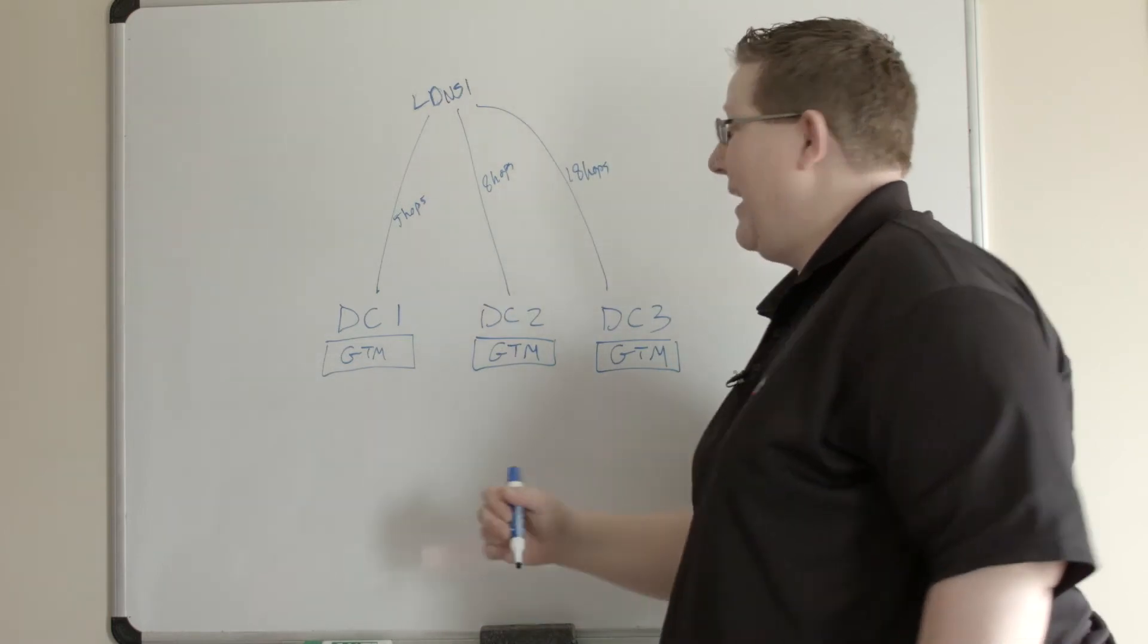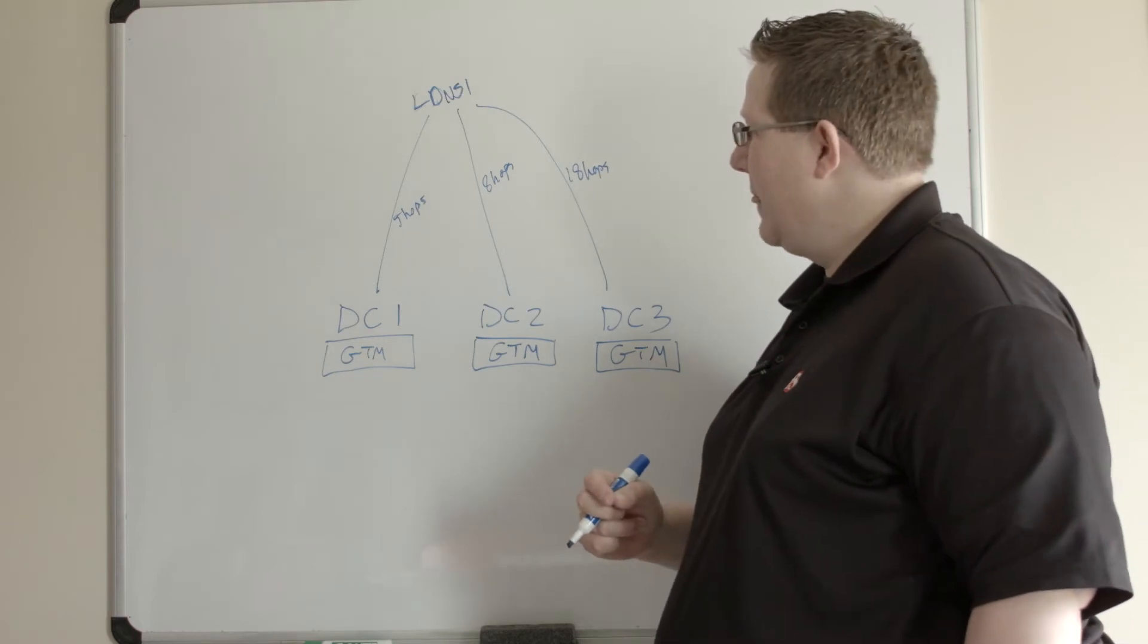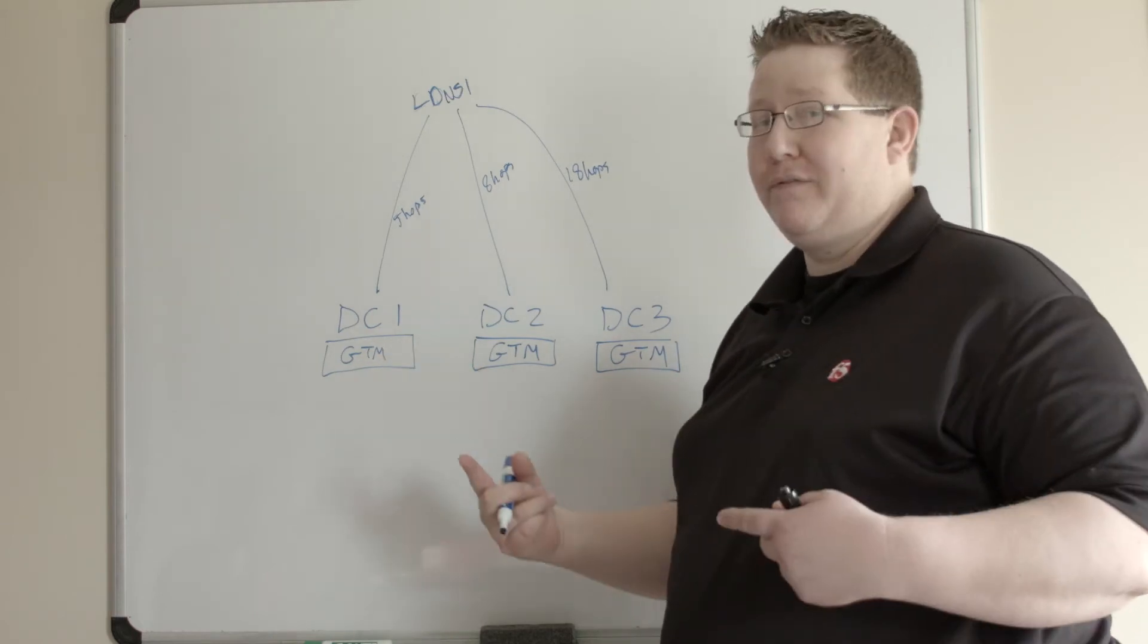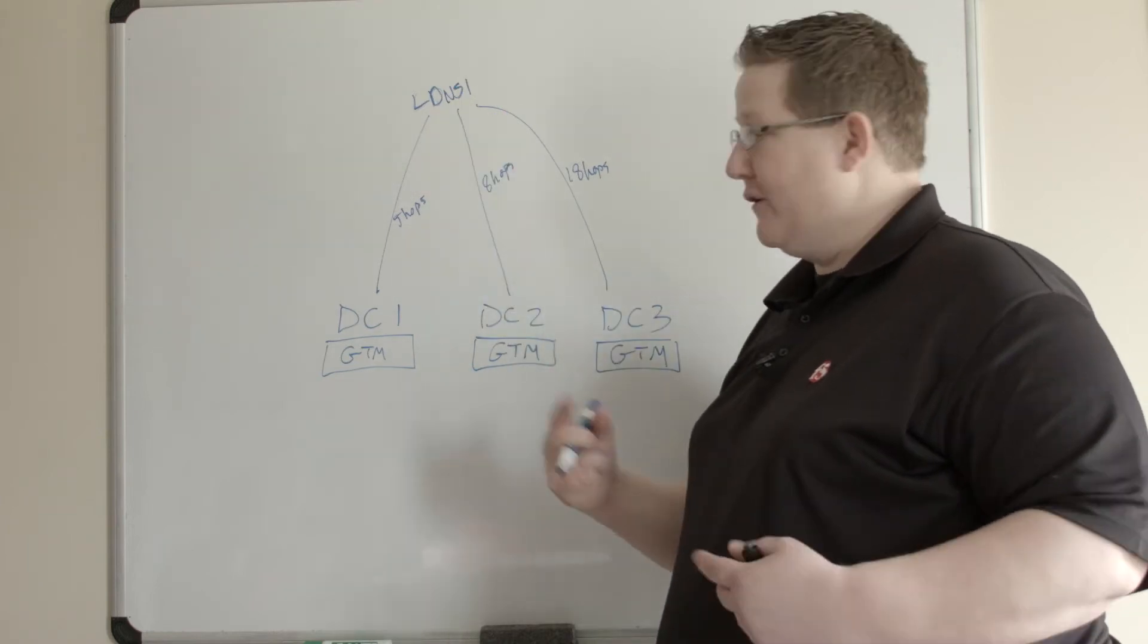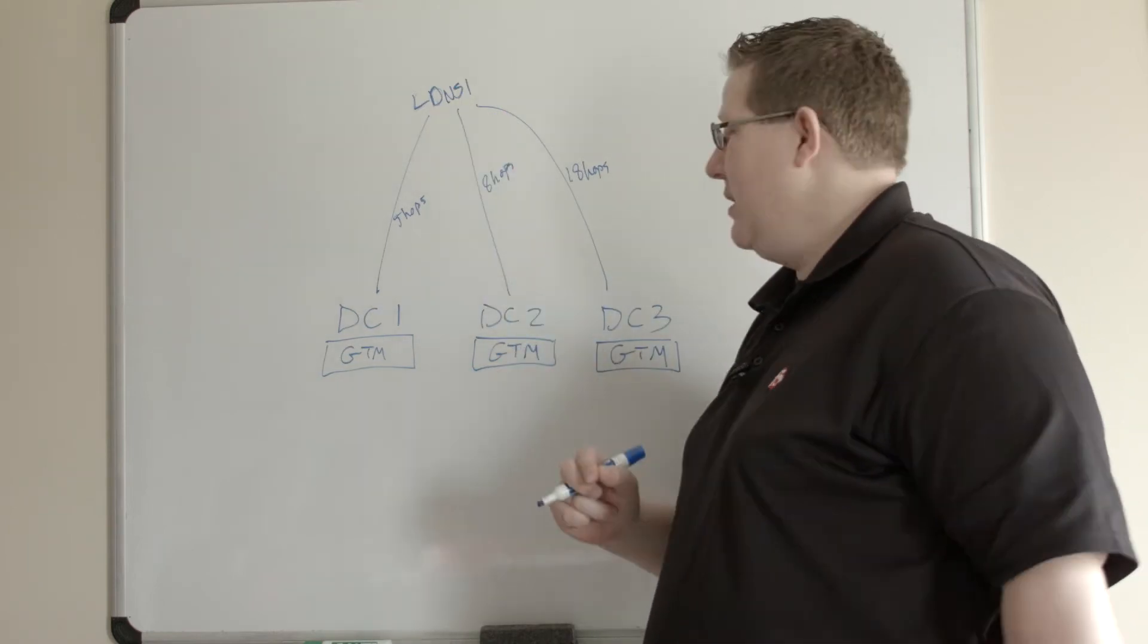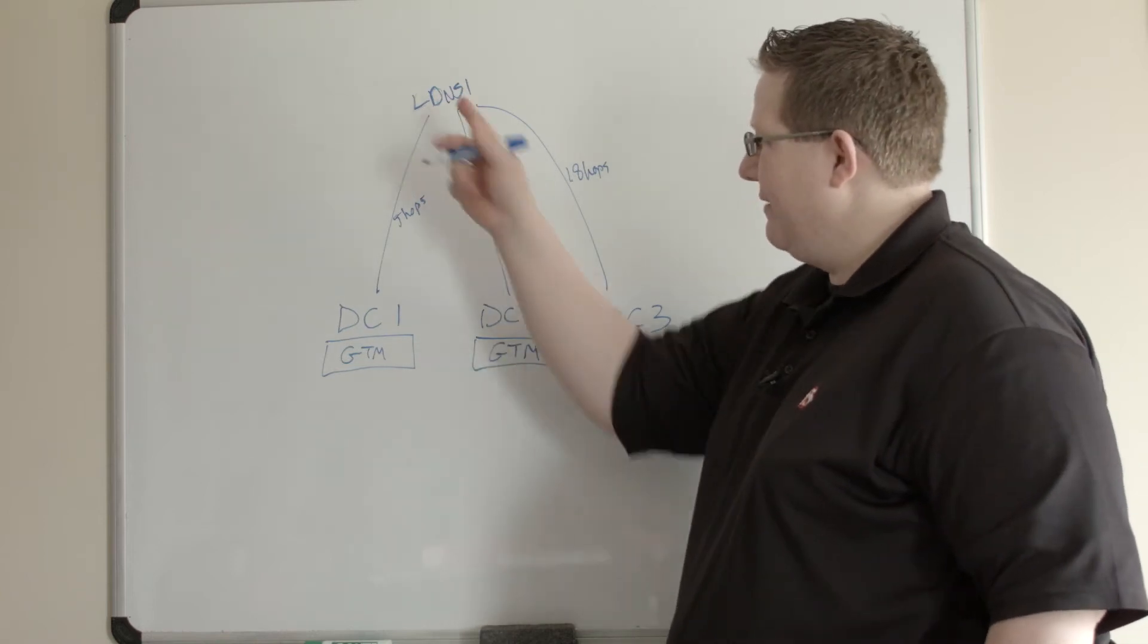If I have the hops algorithm selected as my preferred algorithm in my pool, probably after the first request because I don't have a database for this yet, the first request, it's probably going to fall back to the alternate method or the fallback method because I don't have any stats for this.